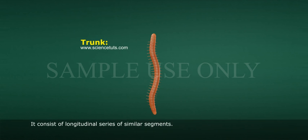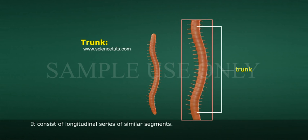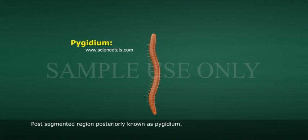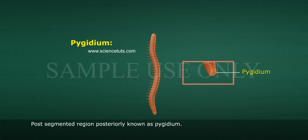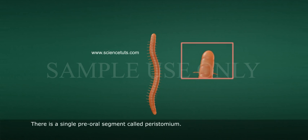The trunk consists of a longitudinal series of similar segments. The post-segmented region, posteriorly, is known as the pygidium. There is a single pre-oral segment called the peristomium.